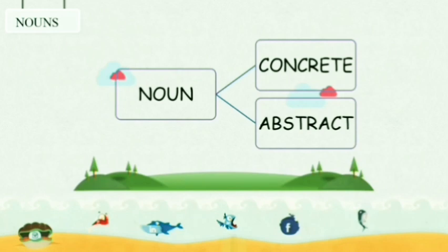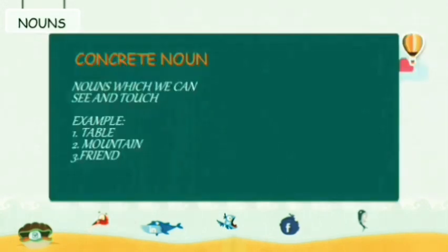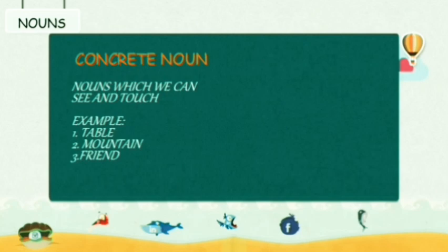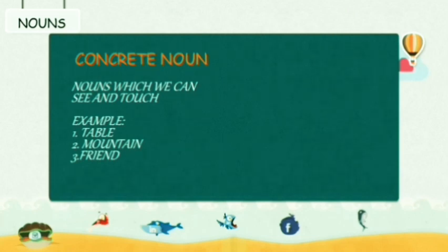Now, let us see the types of nouns. Noun can be divided into concrete noun and abstract noun. What is a concrete noun? A noun which we can see and touch is called a concrete noun. See these examples. Table — can you see a table? Can you touch a table? Yes, so this is a concrete noun. Next one is mountain — can you see a mountain? Can you touch a mountain? Yes, so this is also a concrete noun. And our third example is friend. You can see and touch your friend, so these are examples of concrete noun.